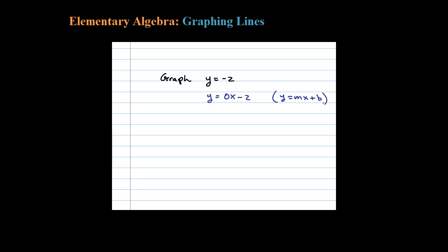Where the slope M is 0 and the B is negative 2. When the slope is 0, we know we get a horizontal line and the y-intercept here occurs when X is 0, 0 comma negative 2.